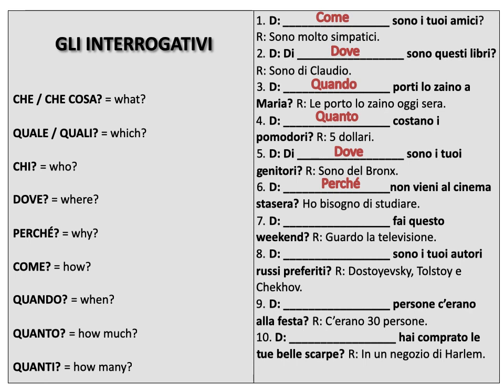Numero sette. Blank fai questo weekend — guardo la televisione. Blank, you do this weekend — I watch TV. Cosa, right? Here we could also write che cosa or che, but we're basically asking what do you do this weekend.